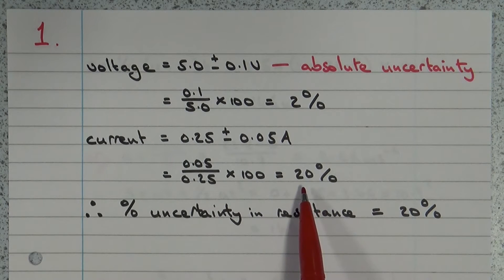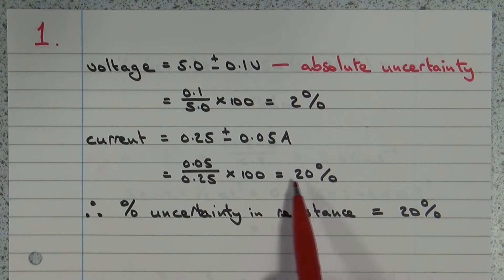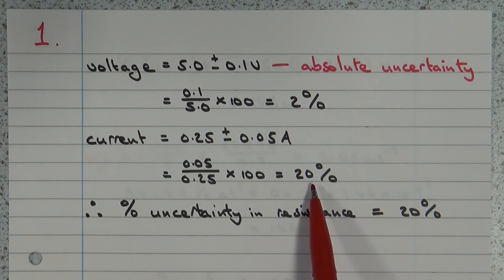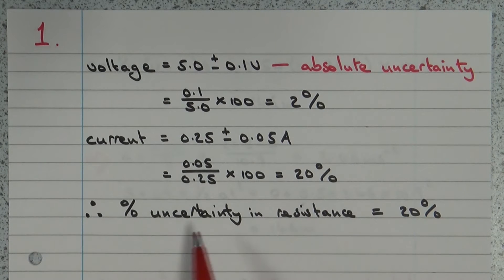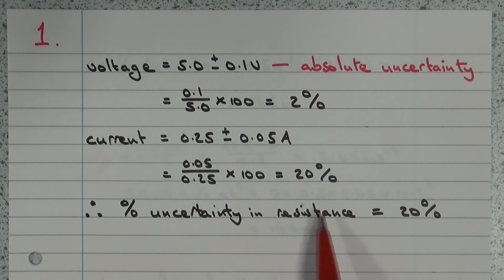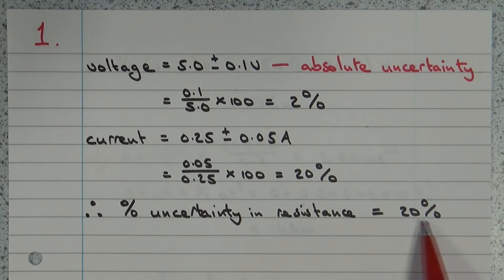The resistance would be calculated from R = V over I. Because the current has the larger percentage uncertainty — 20% — it contributes the greatest uncertainty in resistance. So we take the percentage uncertainty in resistance as being the largest of these values, which is 20%.